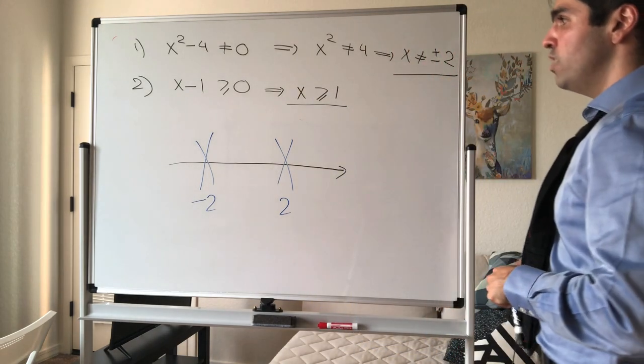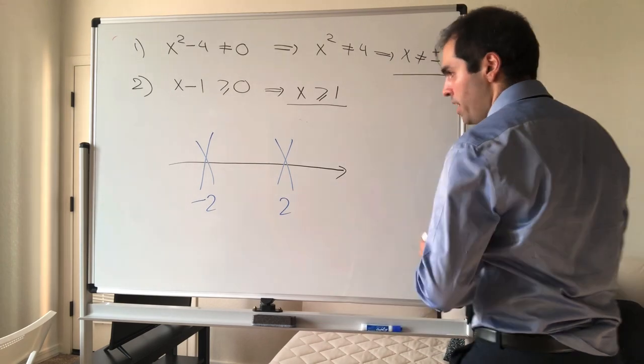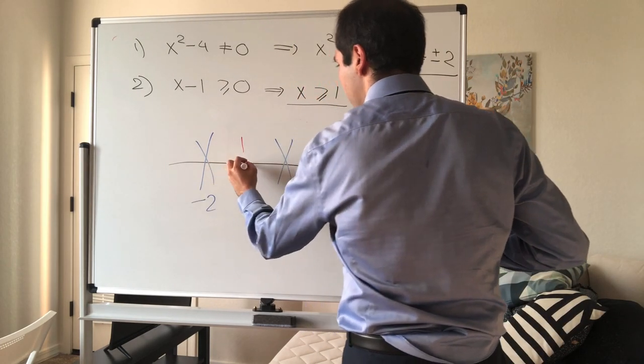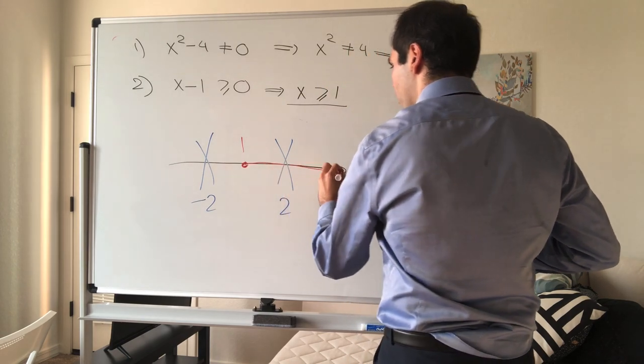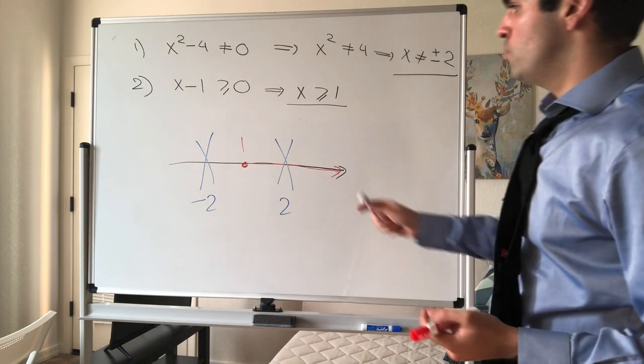So let's put a big x mark here at minus 2 and at 2. And second of all, as I said, we want x to be greater or equal to 1. So basically, what I'm saying is ignore whatever is before 1 and let's just focus on whatever is after.